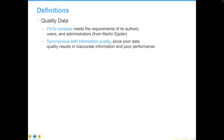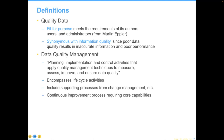The next definition is data quality management: planning, implementation, and control activities that apply quality data management techniques to measure, assess, improve, and ensure data quality. This means it encompasses a variety of different life cycles. And it has to include supporting processes. If you're trying to change the culture in your organization, you need change management and organizational leadership around this, plus thinking of this as a continuous improvement process, requiring your organization to develop core expertise it may not yet have.